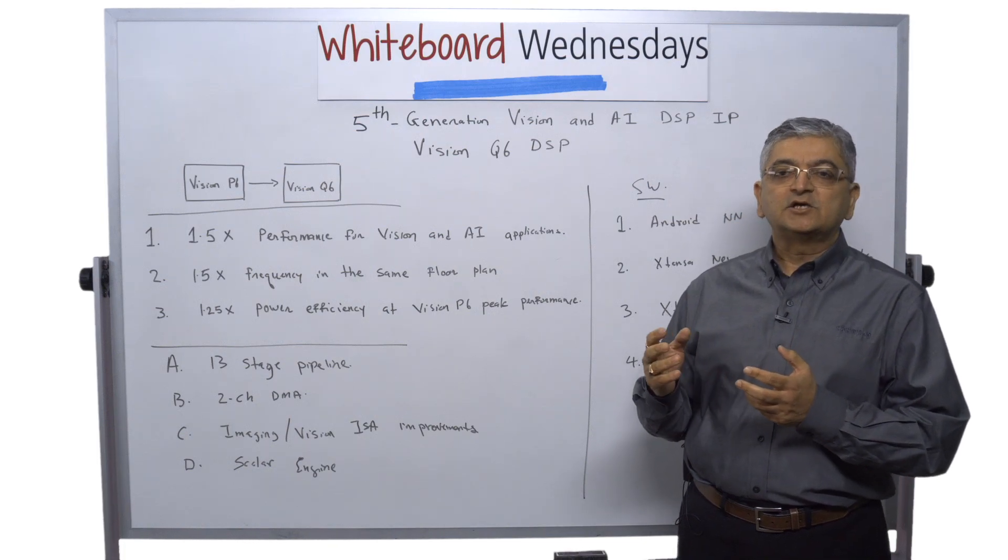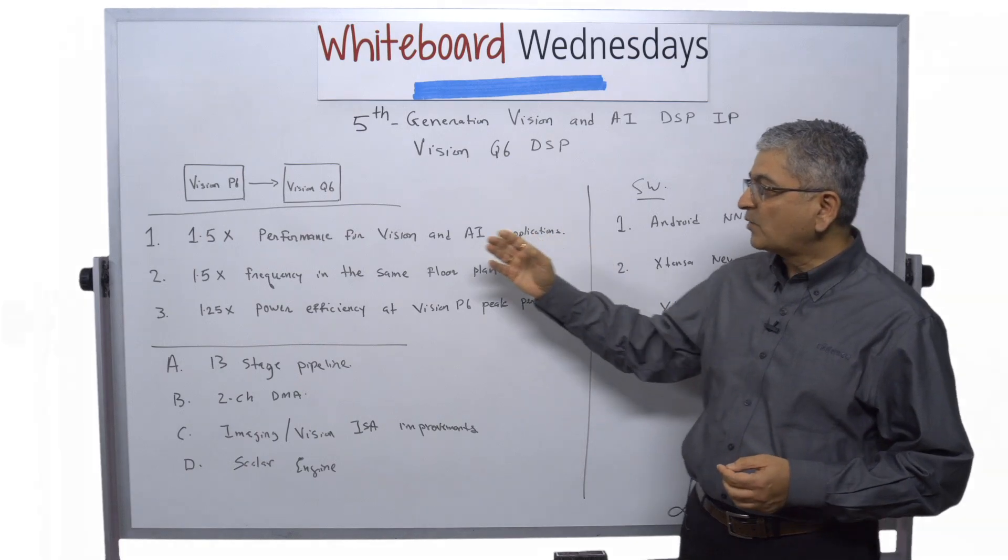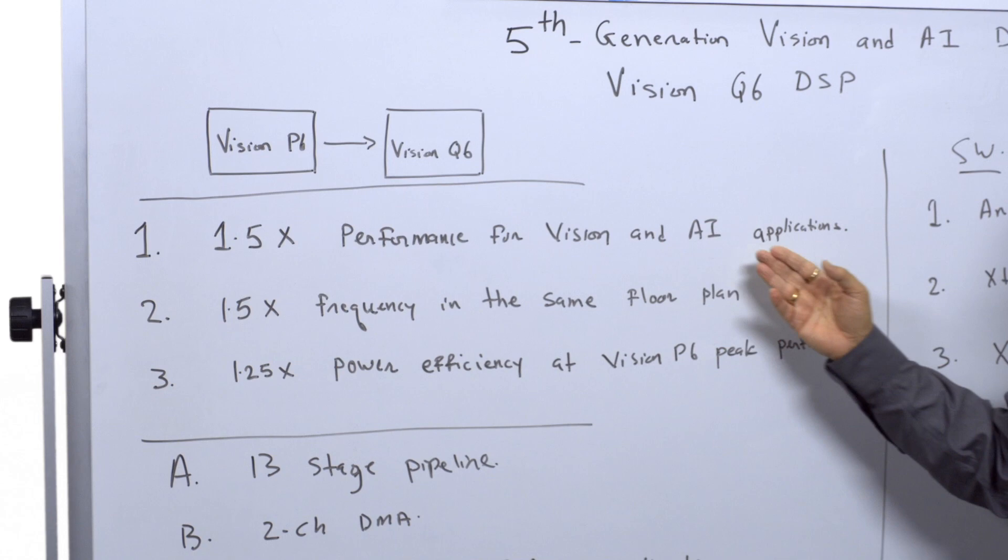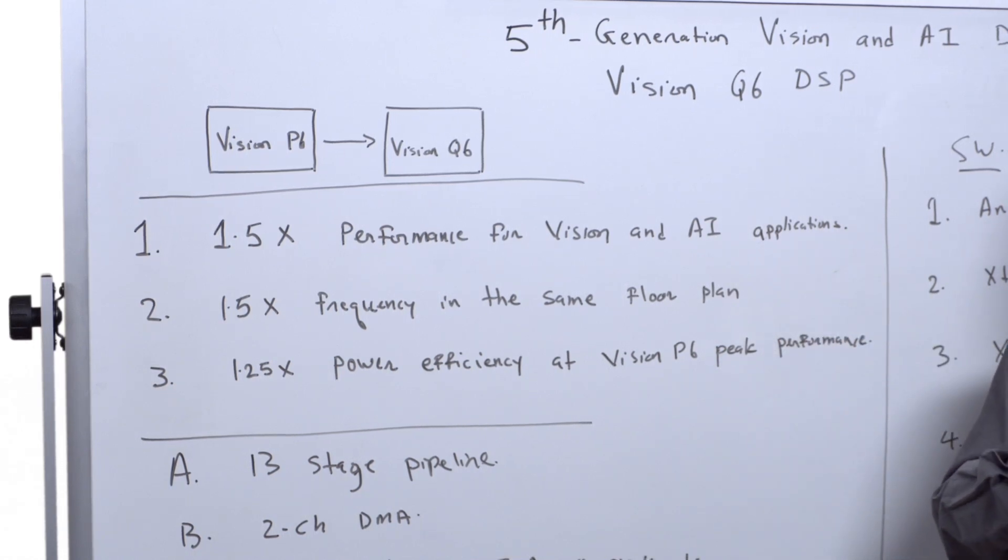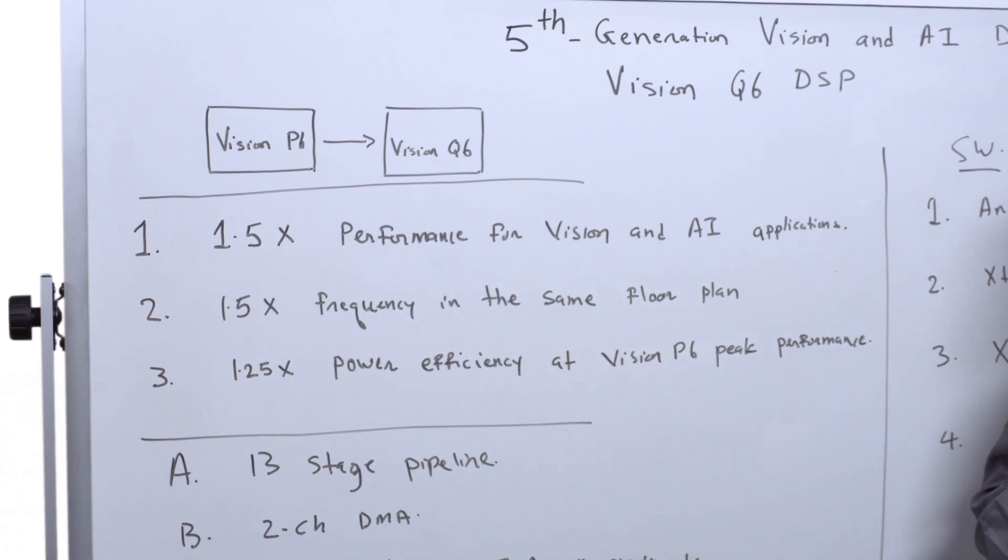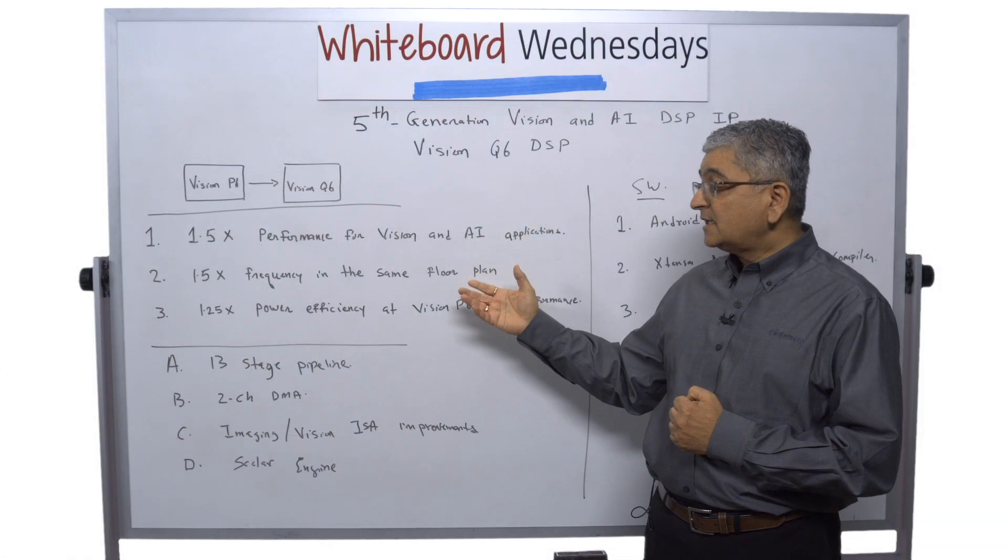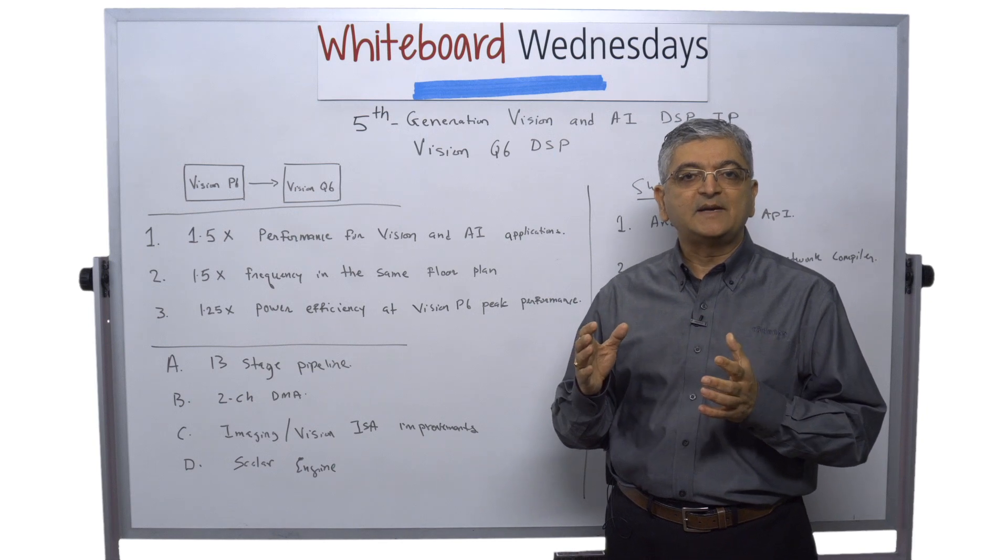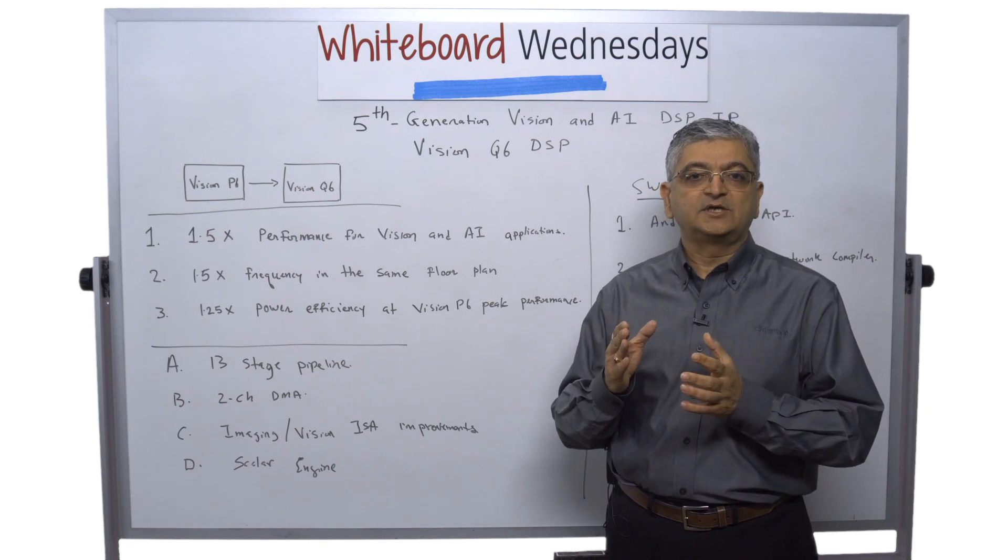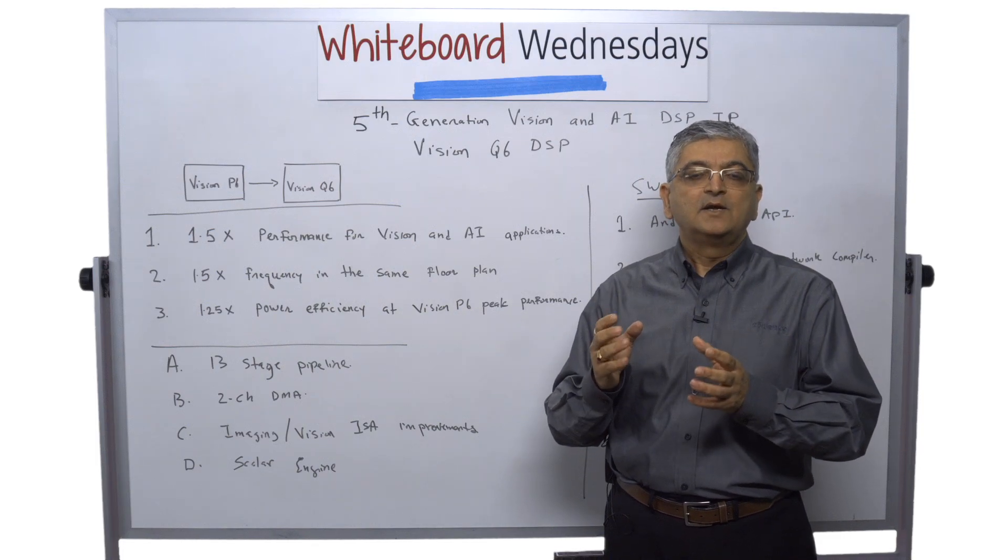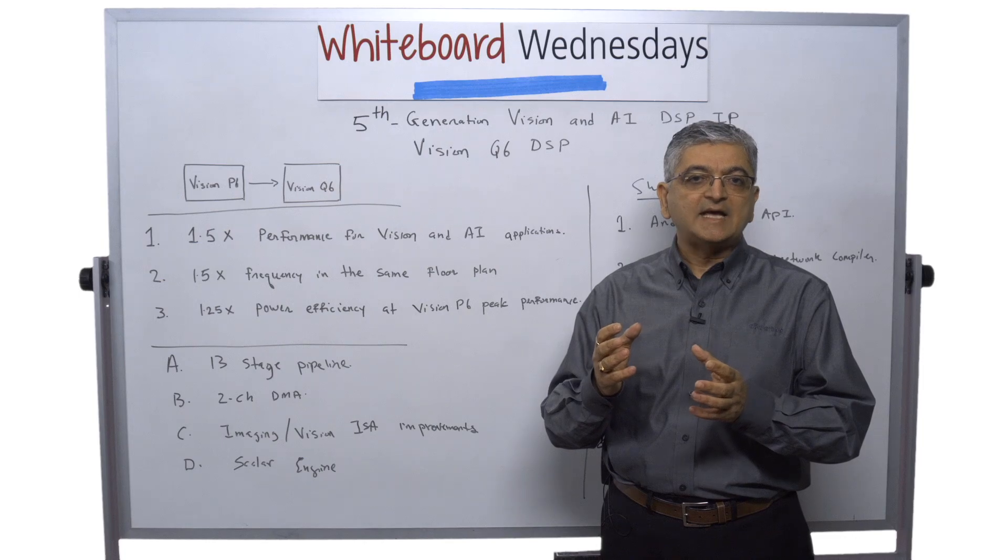With the introduction of Vision Q6 DSP, we are providing 1.5x performance for Vision AI application compared to our Vision P6 DSP. We are also providing 1.5x frequency in the same floor plan. And most important, for all these applications, the power consumption is very important because all these markets want to utilize our DSP on the edge.